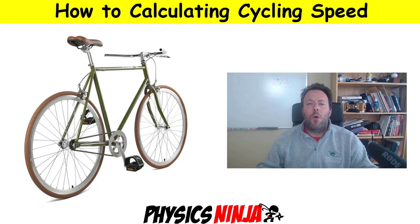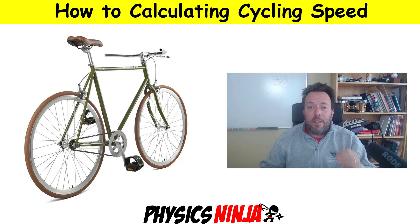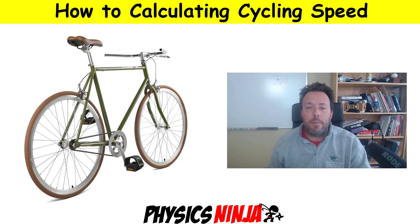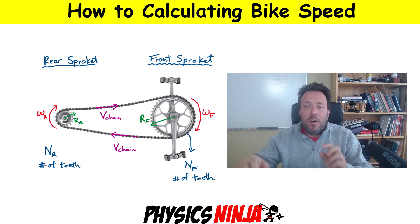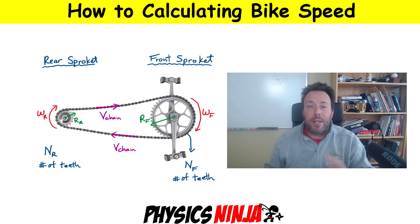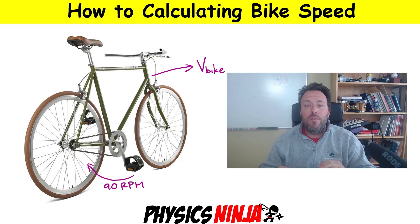Hi everybody! PhysicsNinja here. One of my favorite activities in the world is riding my bicycle, so I thought I'd make a video to show you how you calculate the speed of a bicycle. We're going to look at all the rotational kinematics involved in riding a bicycle and making the wheel turn — specifically the chain, the front sprocket versus the rear sprocket, and then apply all of that to calculate how fast the bike moves if I'm rotating the pedals at a certain RPM.